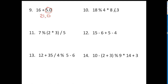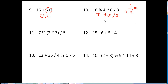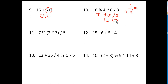Number 10: 18 modulus 4 times 8 divided by 3. These three operations are on the same priority level, so you do them from left to right. 18 modulus 4: 4 goes into 18 four times with a remainder of 2, so that is 2, then times 8 is 16. Now 16 divided by 3: 3 goes into 16 five times, and since an int divided by an int is an int, the answer is 5.